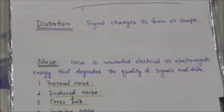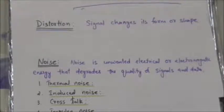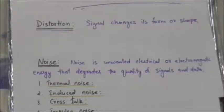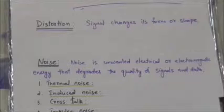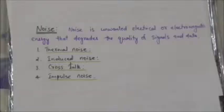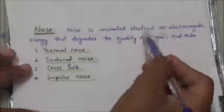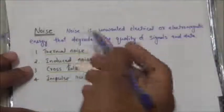If the delay is not exactly the same as the period duration, these differences in delay may create a difference in phase. In other words, the signal components at the receiver have phases different from what they had at the sender, so the shape of the composite signal is not the same.